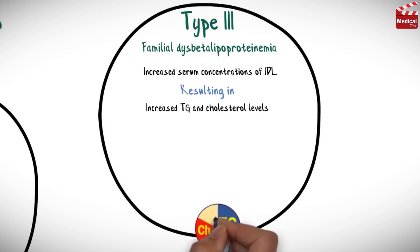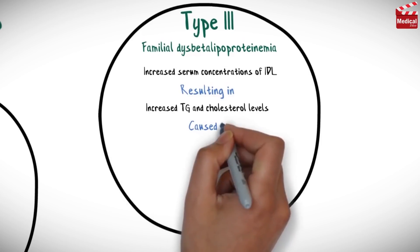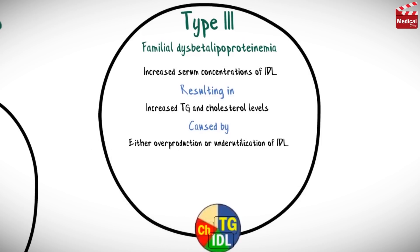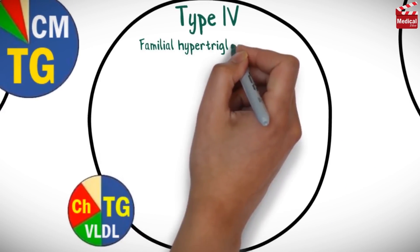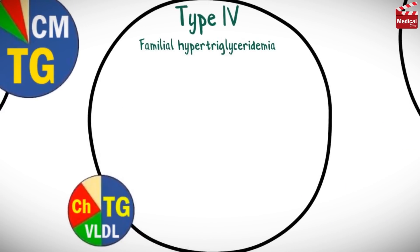Type 3 is familial dysbetalipoproteinemia, characterized by increased serum concentrations of IDL, resulting in increased triglycerides and cholesterol levels. It is caused by either overproduction or under-utilization of IDL due to mutant apolipoprotein E. In this condition, xanthomas and accelerated vascular disease develop in patients by middle age.